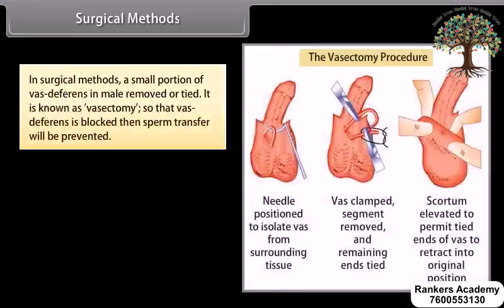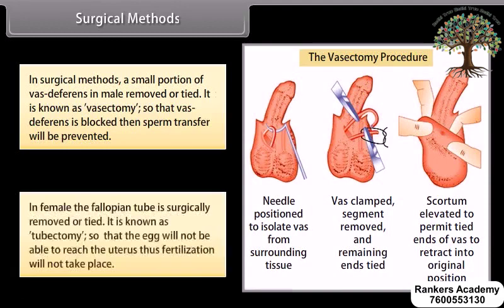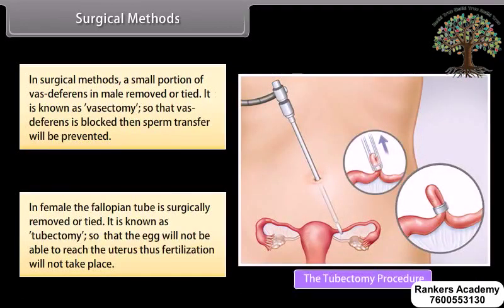In surgical methods, a small portion of the vas deferens in males is removed or tied — this is known as vasectomy — so that vas deferens is blocked and sperm transfer is prevented. In females, the fallopian tube is surgically removed or tied, known as tubectomy, so that the egg will not be able to reach the uterus and fertilization will not take place.